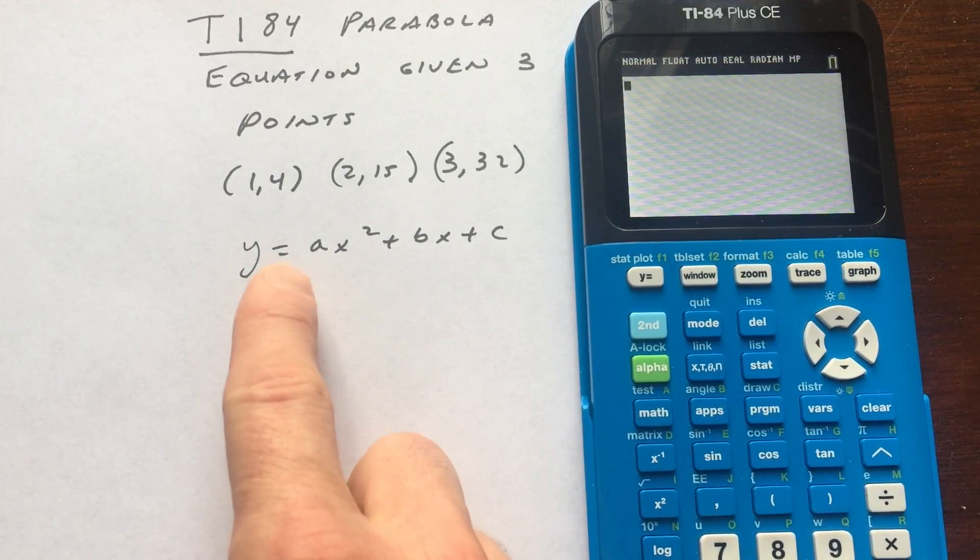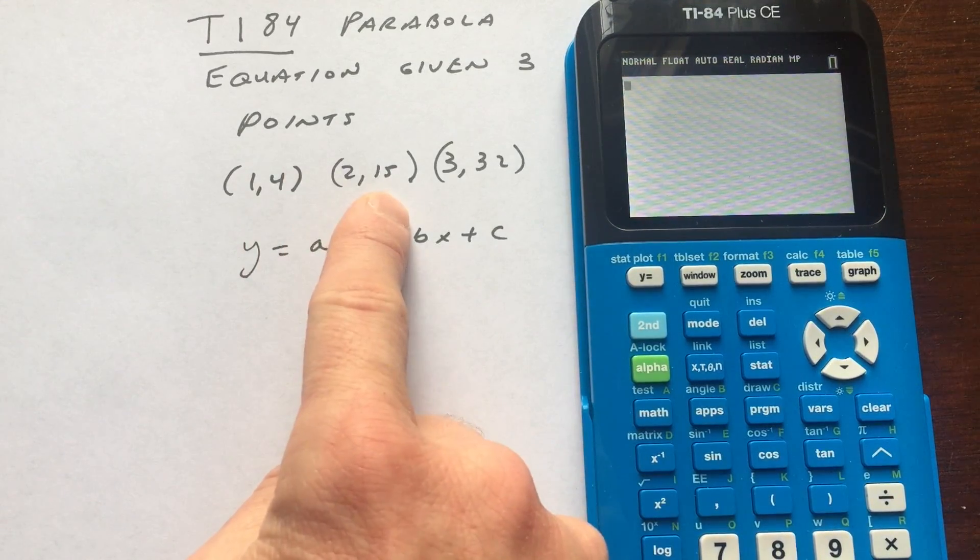And in this example, we're going to be using the points (1,4), (2,15), and (3,32).